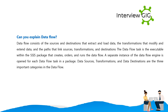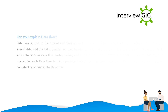Data flow consists of sources and destinations that extract and load data, transformations that modify and extend data, and paths that link sources, transformations, and destinations. The data flow task is the executable within the SSIS package that creates, orders, and runs the data flow. A separate instance of the data flow engine is opened for each data flow task. Data sources, transformations, and data destinations are the three important categories in data flow.